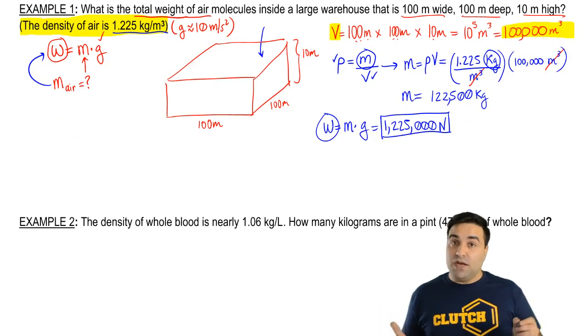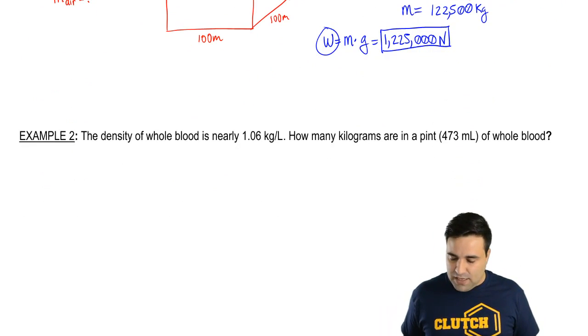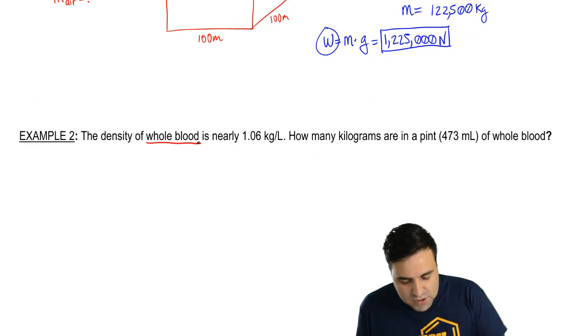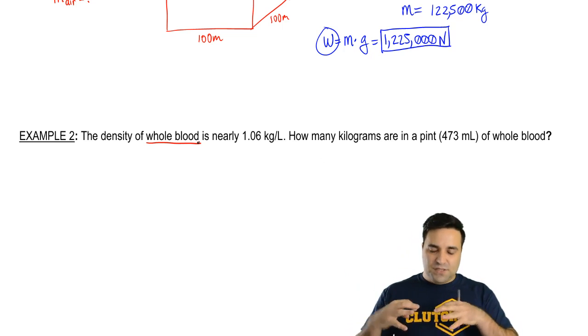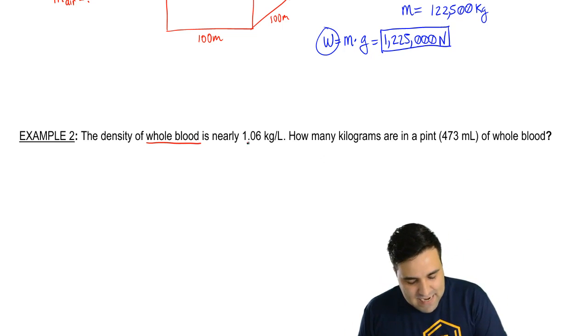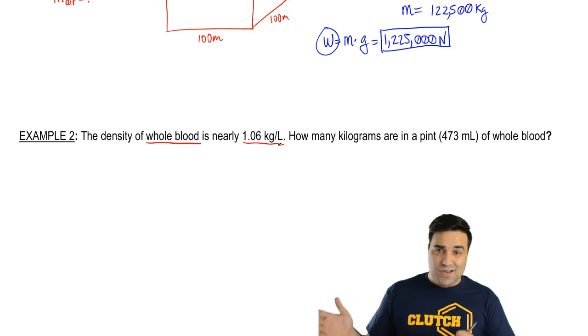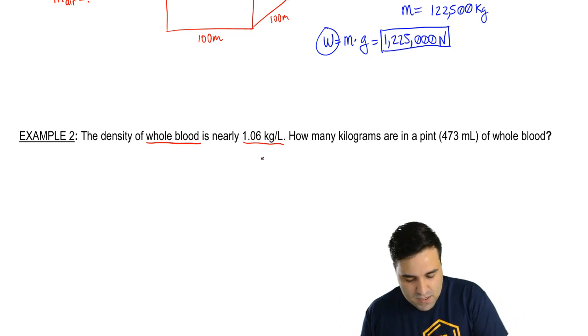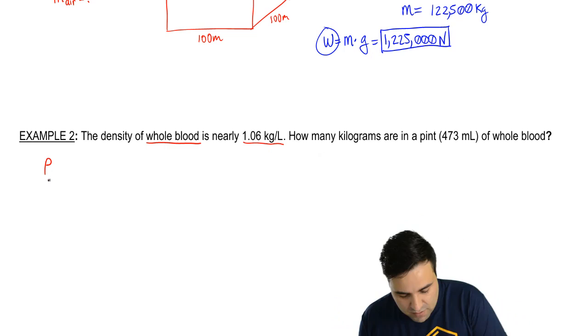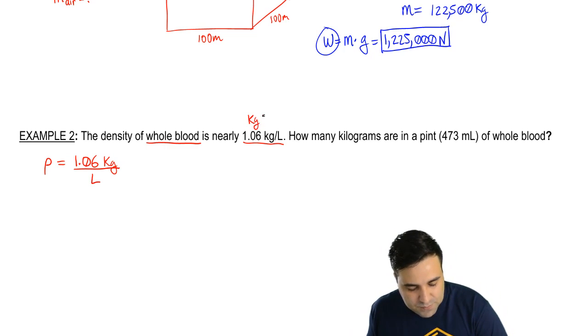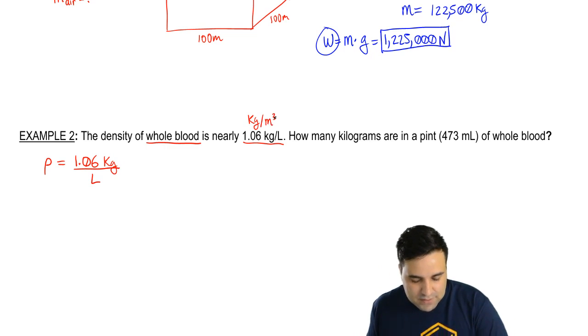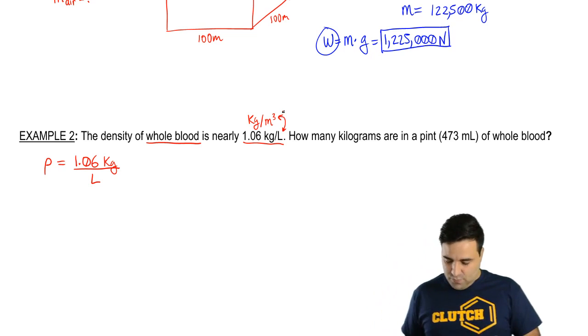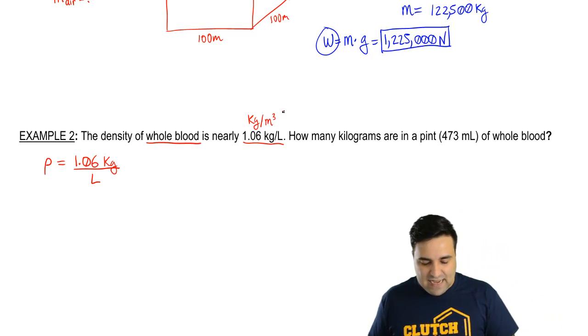Let's do this example here. If you want, you can pause the video and give this a shot yourself. I'm going to keep rolling here. It says the density of whole blood. So whole blood means it's all the different parts you have of your blood, plasma, everything else, is nearly this. Now, in physics, whenever they say a value is nearly or approximately, we're just going to use that value. So density rho of whole blood is 1.06 kilograms per liter. Notice that it didn't say kilograms per cubic meter. Instead I've said per liter. And these two are not equivalent, but they are related. And we'll talk about this in a future video. So we're just going to leave it like that for now.